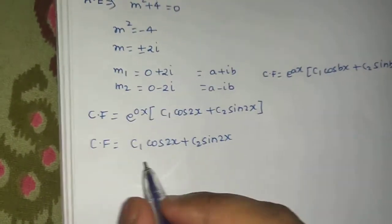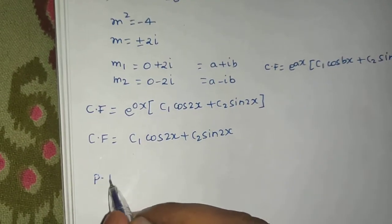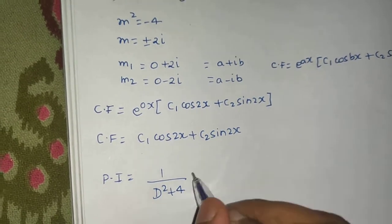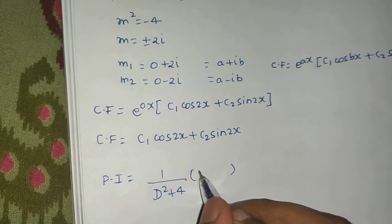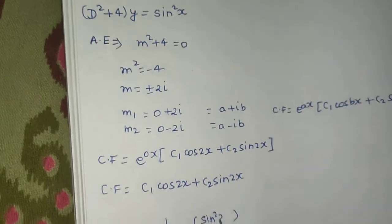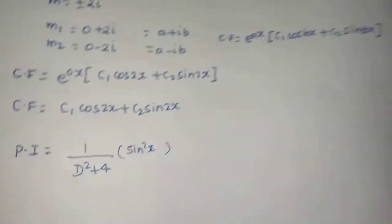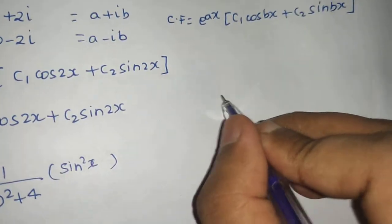Now coming to the third step, which is to find the particular integral, which is 1 upon f of d, which is here d square plus 4. This will operate on whatever is in RHS, so that is sin square x.